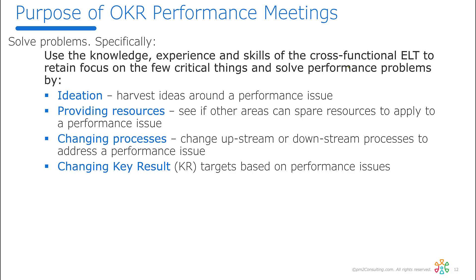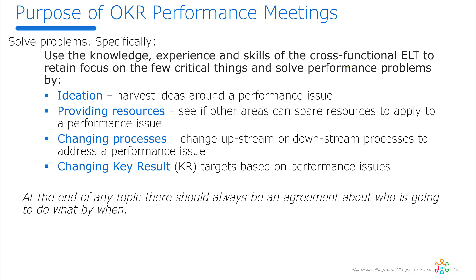The fourth topic is changing your key results — when you've tried ideas, resources, and process changes and still can't solve it, you bring it back to the team to change the key results. The fifth topic, which comes up occasionally, is escalation: you need to set up a tiger team to go solve the problem. The net test is this: at the end of any topic, you should always be able to agree on who's doing what by when. If you don't have that agreement, the topic should not have been in the performance meeting.